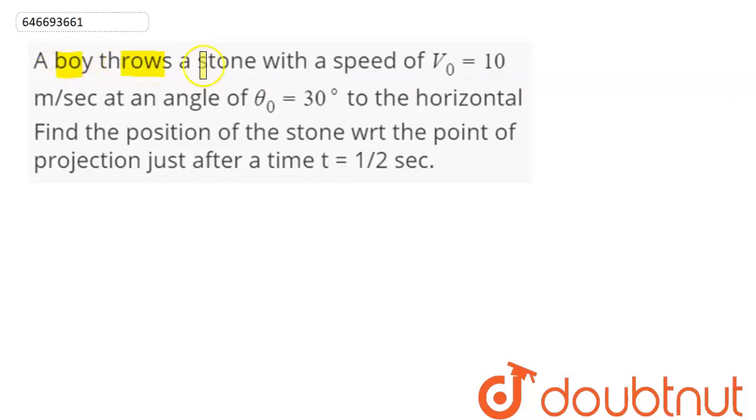Question is: a boy throws a stone with a speed of v₀ equal to 10 meter per second at an angle of θ₀ equal to 30 degrees to the horizontal. Find the position of the stone with respect to the point of projection just after a time t equals 1 upon 2 seconds.